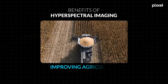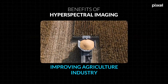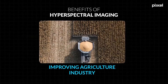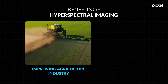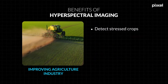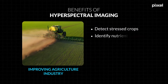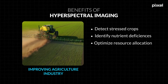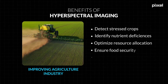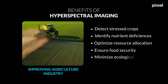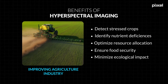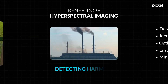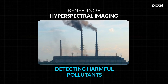One of the greatest benefits of hyperspectral imaging lies in its ability to improve our agriculture industry. By analyzing the reflected light from crops across multiple wavelengths, we can detect stressed crops, identify nutrient deficiencies, and optimize resource allocation, ensuring food security and minimizing the ecological impact of farming practices.